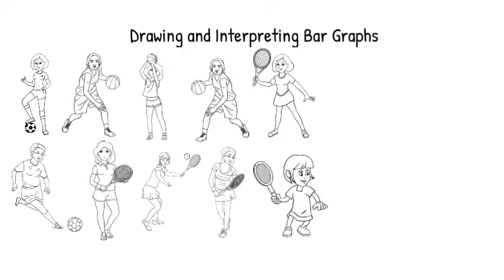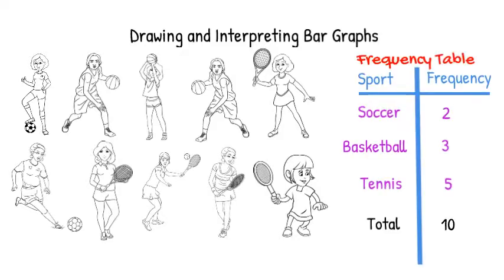In a previous video, we showed the results from surveying 10 girls on which sport they played. We found that 2 played soccer, 3 played basketball, and 5 played tennis, and we used that information to create a frequency table.